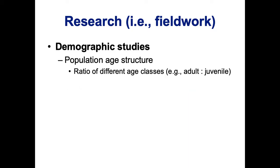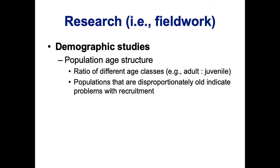One thing we often want is population age structure, or the ratio of different age classes, such as the ratio of adults to juveniles. Populations that are mostly old individuals often indicate problems with recruitment, or having young individuals mature to become reproductive. We want to know if the population is growing or not — we can look at the age structure in human populations and tell if it's stable, increasing, or declining, and we can use this same approach for animals.